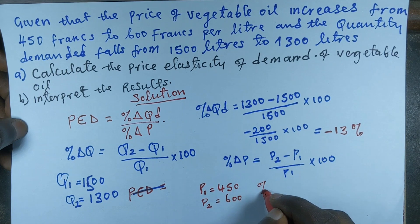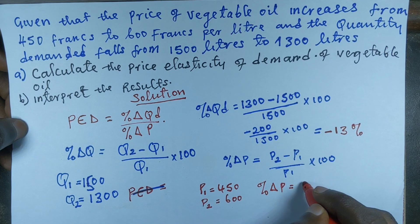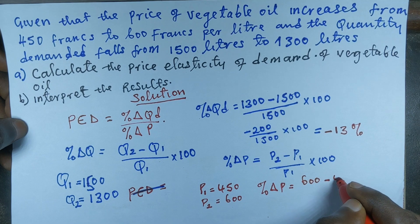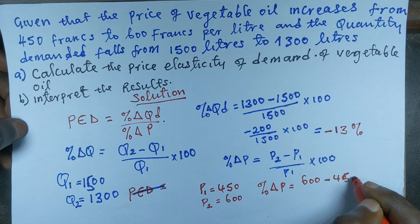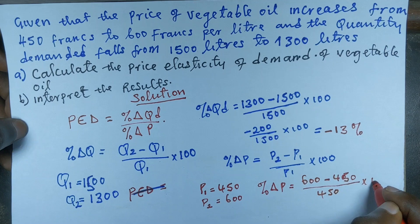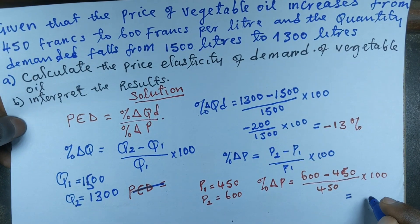So the percentage change in price equals P2, which is 600, minus 450, all divided by 450, times 100, which gives us 33 percent.